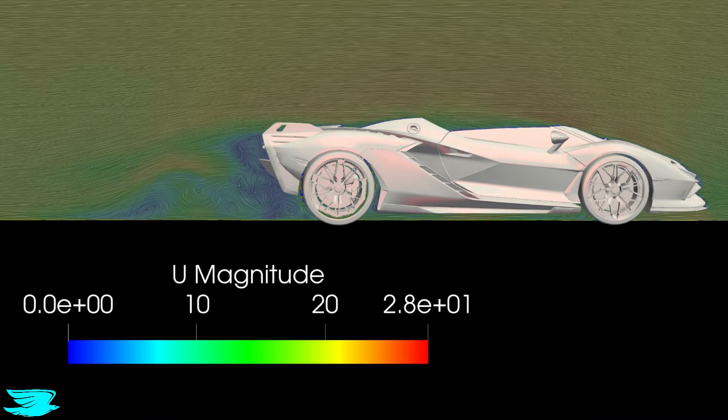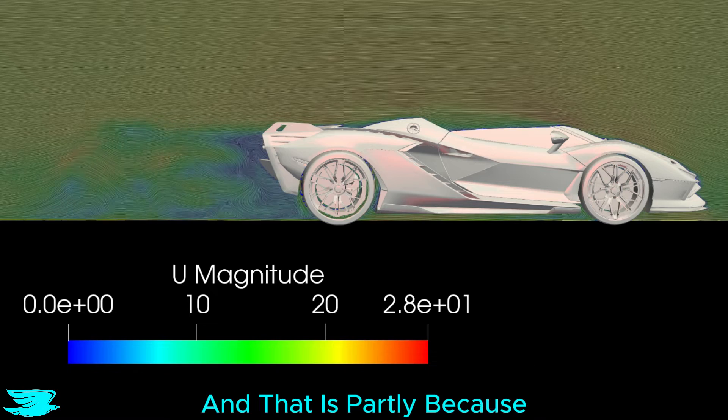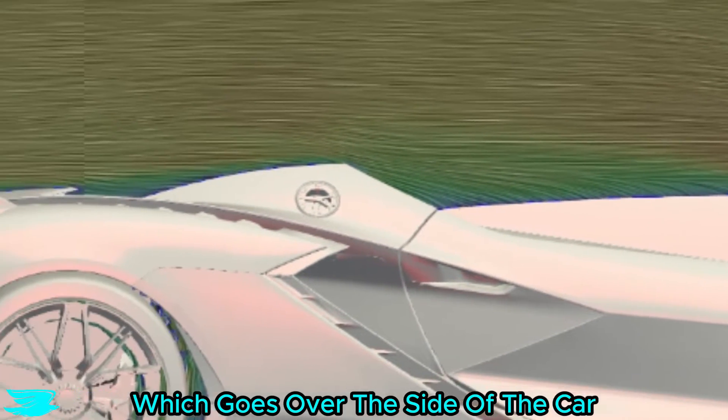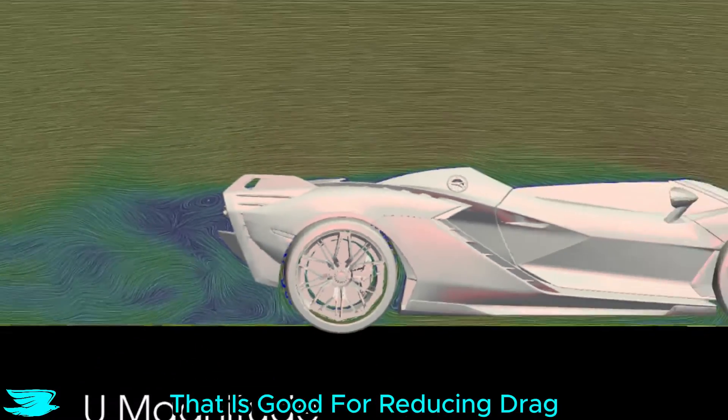If we move to the right side of the car, the wake becomes much smaller, and that is partly because there is fast moving flow there, which goes over the side of the car and then gets redirected over the rear. That is good for reducing drag.